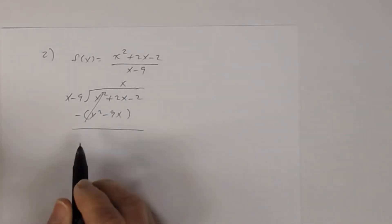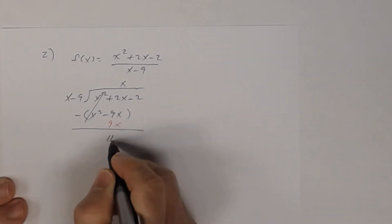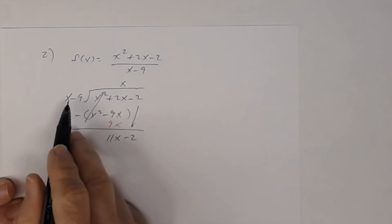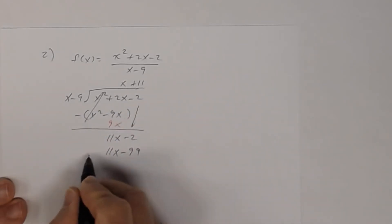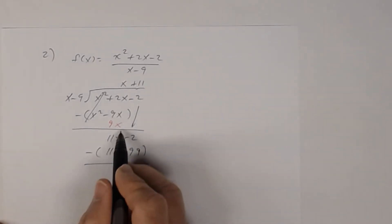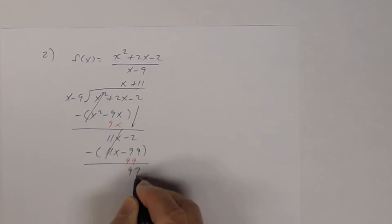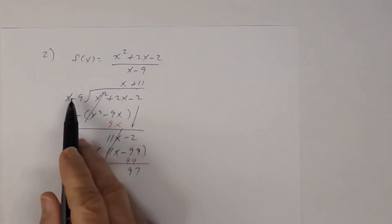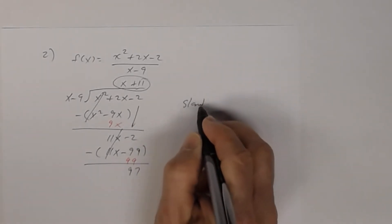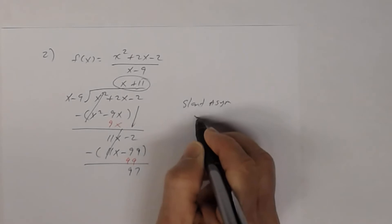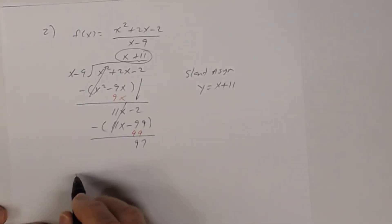Bringing down the negative 2 and continuing: x into 11x gives 11. Then 11 times (x minus 9) gives 11x minus 99. Subtracting: 11x minus 11x is 0; negative 2 minus negative 99 gives 97. The degree of the remainder (a constant, degree 0) is less than the degree of the divisor (degree 1), so we stop. The slant asymptote is y equals x plus 11.